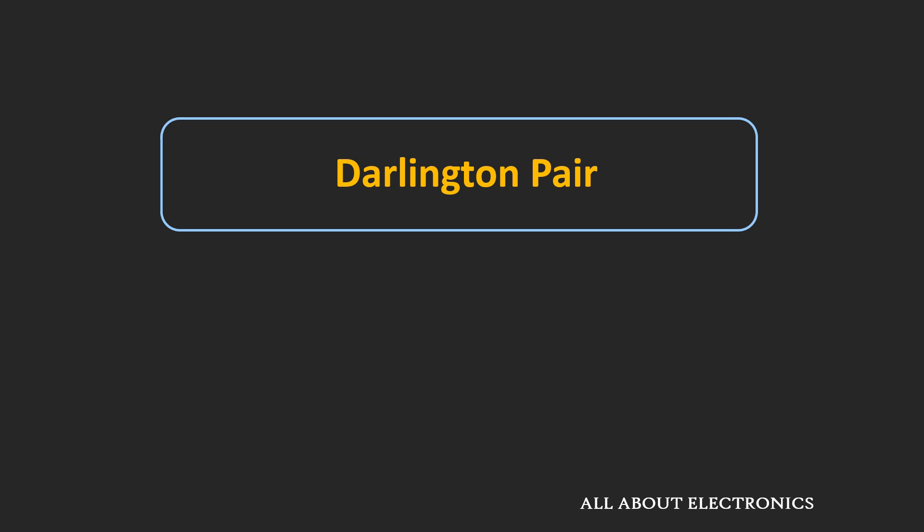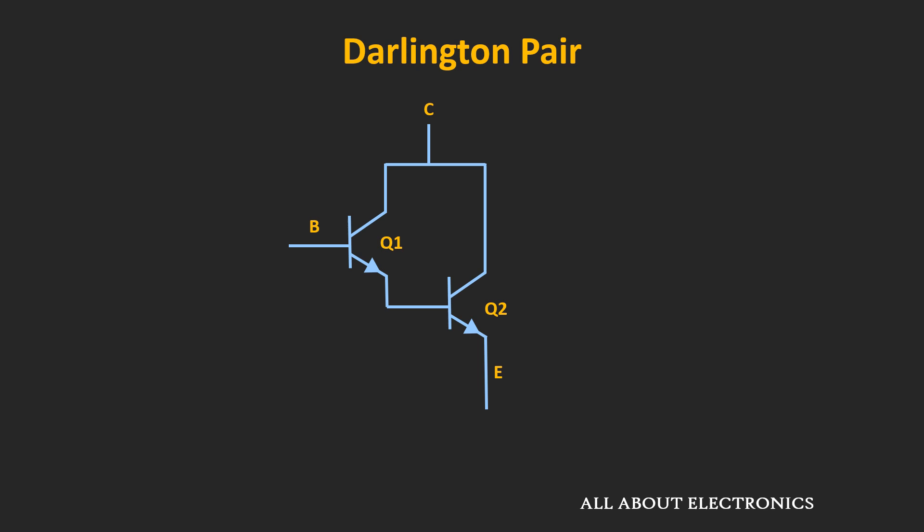Hey friends, welcome to the YouTube channel all about electronics. In this video, we will learn about the Darlington pair. This Darlington pair is a very popular transistor configuration which provides a very high value of β, and that is why it is sometimes also known as the super-β transistor.